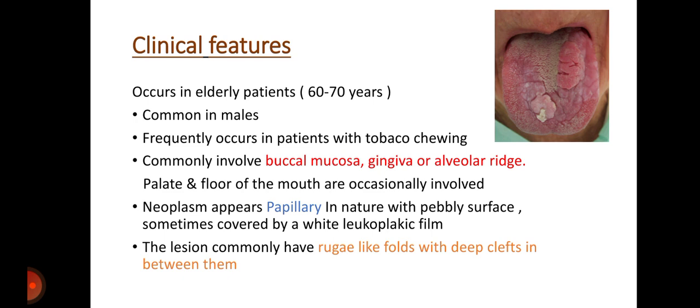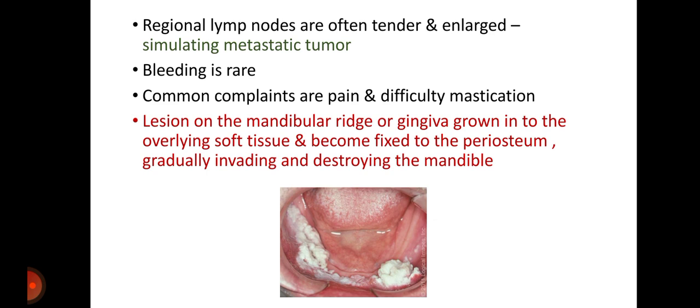The neoplasm appears papillary in nature with a pebbly surface, which is sometimes covered by a white leukoplakic film. The lesions commonly have rugae-like folds with deep clefts in between them, which is clearly visible from the picture. Regional lymph nodes are often tender and enlarged, simulating metastatic tumor. Bleeding is rare. Common complaints are pain and difficulty in mastication.